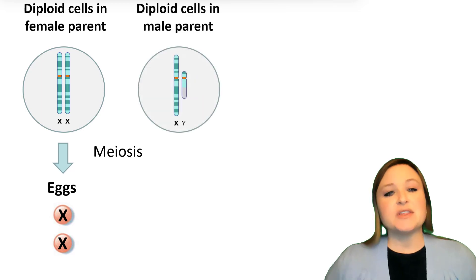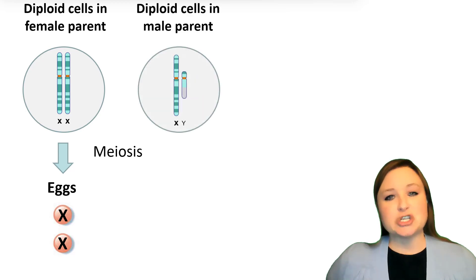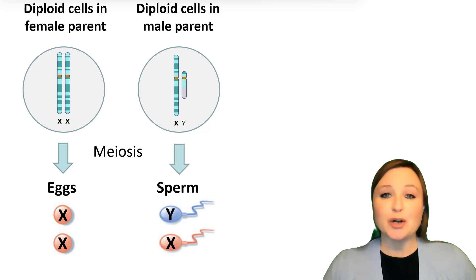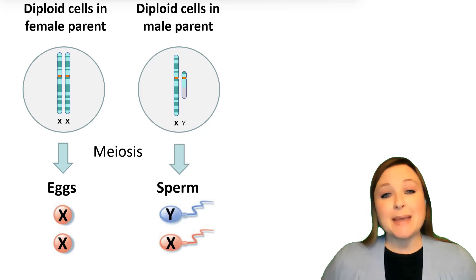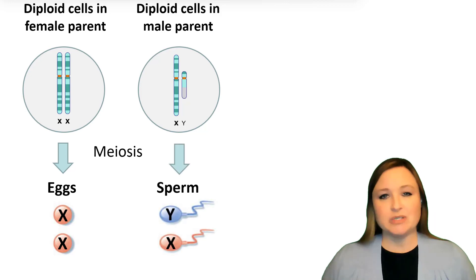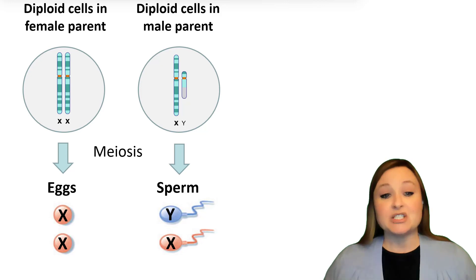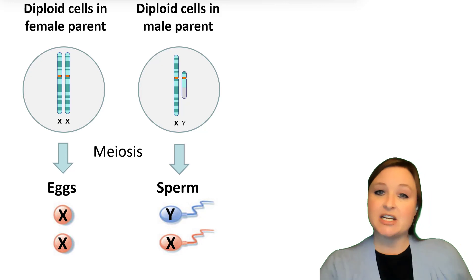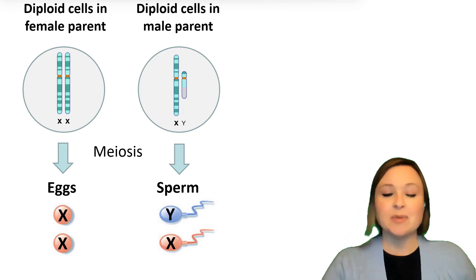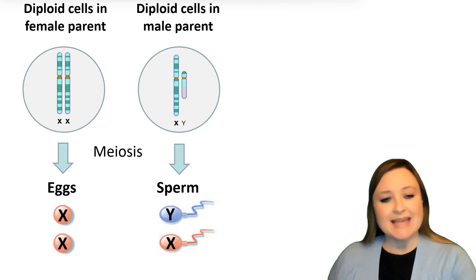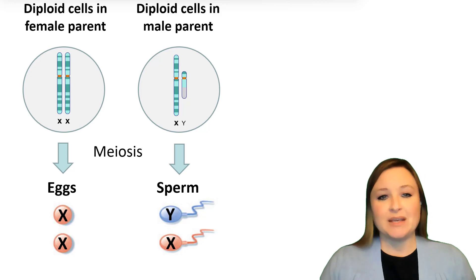If we look at the male cells and those germ cells that undergo meiosis to form sperm, because a male has an X and a Y chromosome, those two chromosomes are going to be separated into different sperm. So the Y chromosome is going to end up in one sperm, whereas the X chromosome of the male is going to end up in the other sperm.